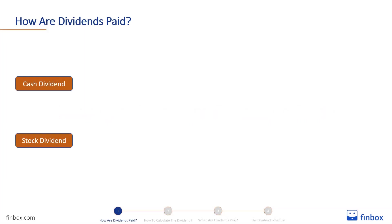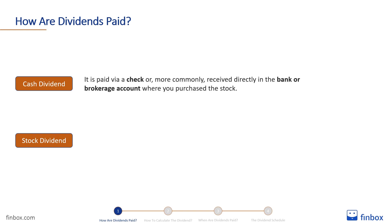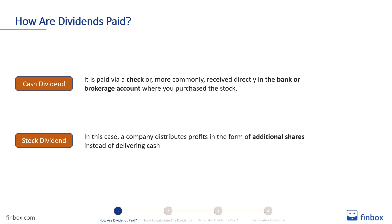Companies usually distribute dividends in the form of cash, but sometimes opt to do a stock dividend. A cash dividend is paid via a cheque, or more commonly, received directly in the bank or brokerage account where you purchase the stock. With a stock dividend, a company distributes profits in the form of additional shares instead of delivering cash. There are many reasons why a company could decide to distribute additional shares instead of cash, and we will analyse them deeper in the stock dividend lesson. Make sure to subscribe to the channel so you won't miss it.